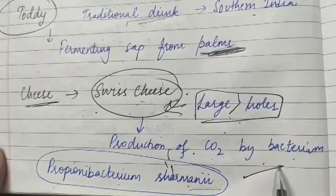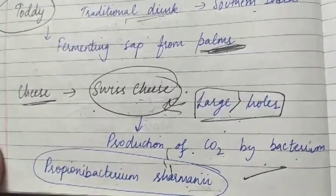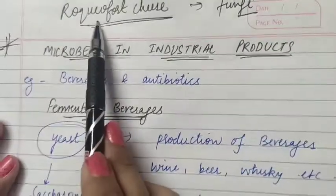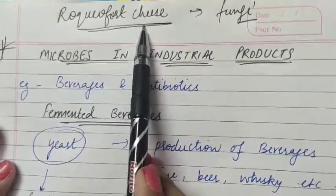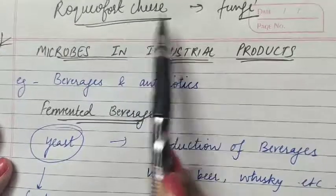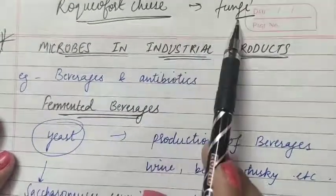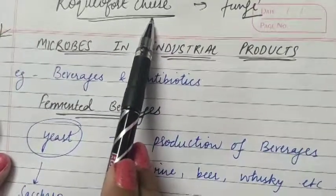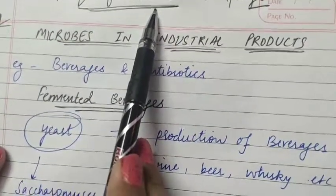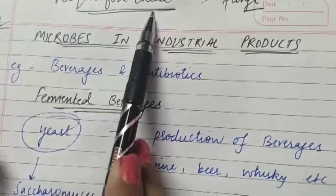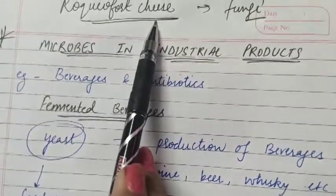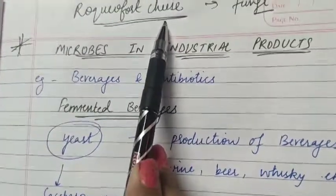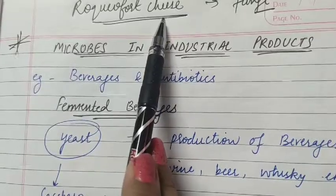You may be asked questions about how the large holes are made in Swiss cheese — remember the name of the bacteria Propionibacterium shermanii. Another example is Roquefort cheese, which is ripened by specific fungi grown on it, providing a particular flavor. These are examples of microbes in household products: LAB bacteria, Saccharomyces cerevisiae, and Propionibacterium shermanii.